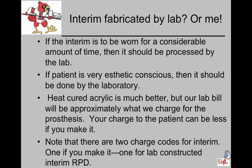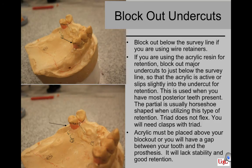Note that there are two charge codes for the interim: one for lab-constructed and one if you do the case yourself, worth an extra point. In most instances when constructing the temporary RPD, you will use two Rottwire direct retainers, one on each side of the arch. More than two costs an extra $50 to $75 per additional retainer. You must block out below the survey line when using wire retainers.